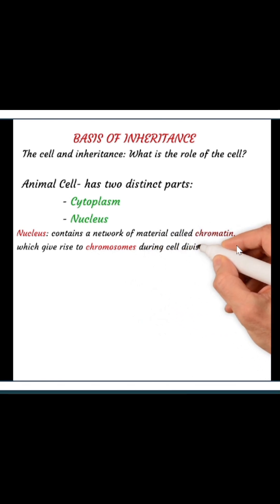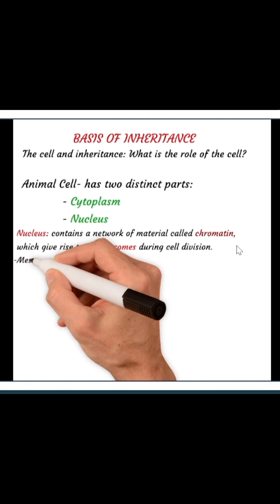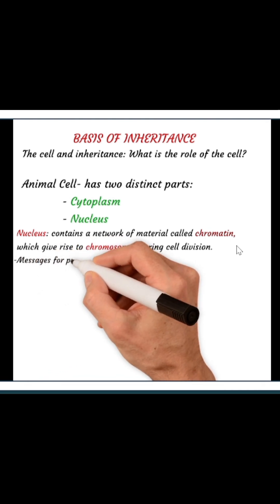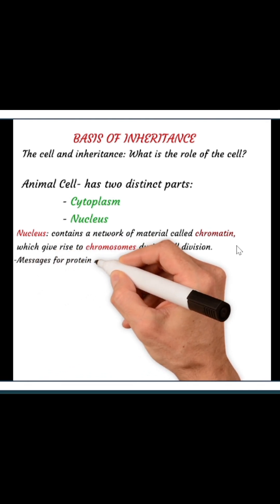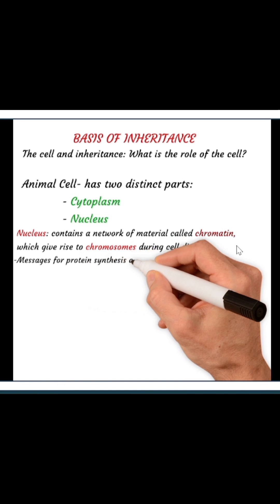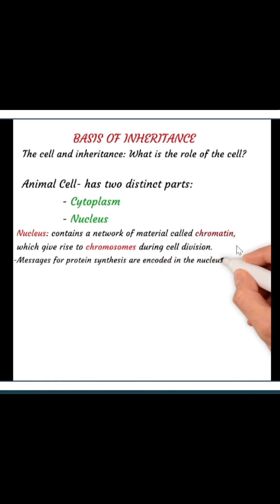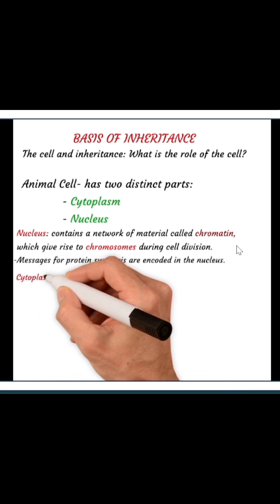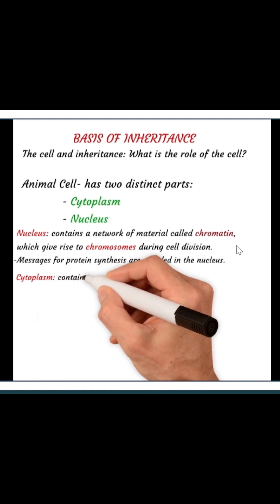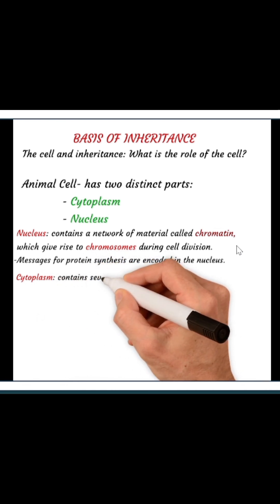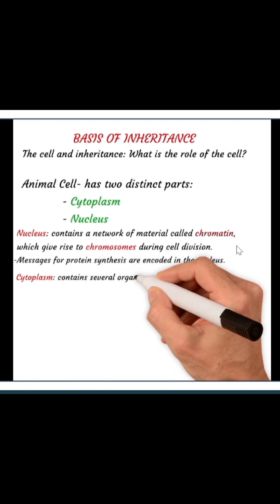From chromatin to chromosomes during cell division. Messages for protein synthesis are usually encoded right inside the nucleus of the cell. The cytoplasm contains several organelles which have their various functions.